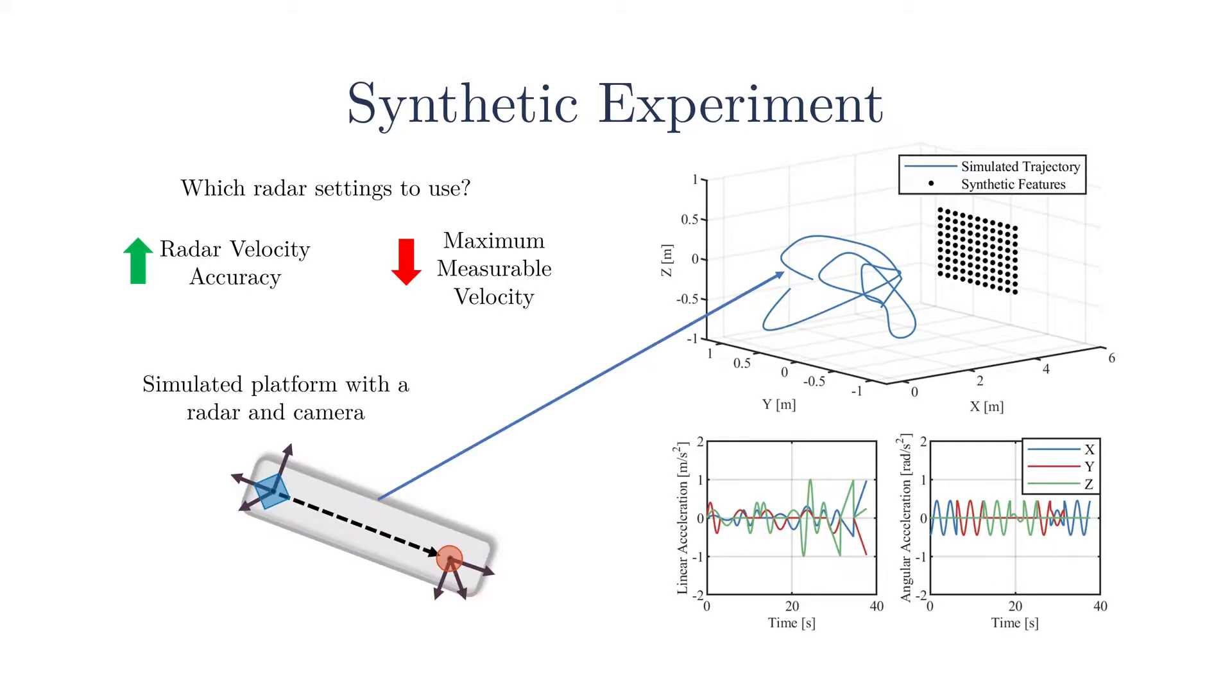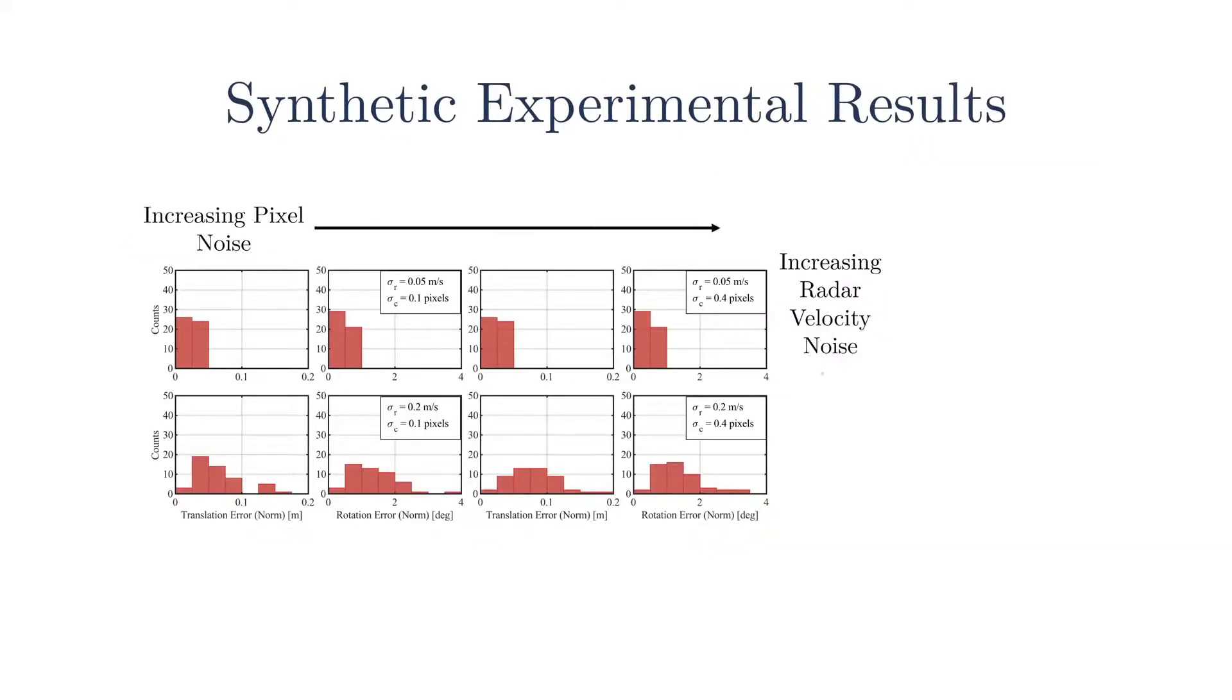We simulated our sensor platform following the trajectory shown on the top right. The two bottom right plots show the linear and angular acceleration experienced by the simulated sensor platform. For the entirety of the trajectory, the simulated camera observed a checkerboard of known size. Our plot to the left shows the accuracy of the estimated calibration parameters for varying levels of camera and radar measurement noise. These plots show that the radar noise has a much larger effect on the calibration parameter quality than the camera pixel error does.